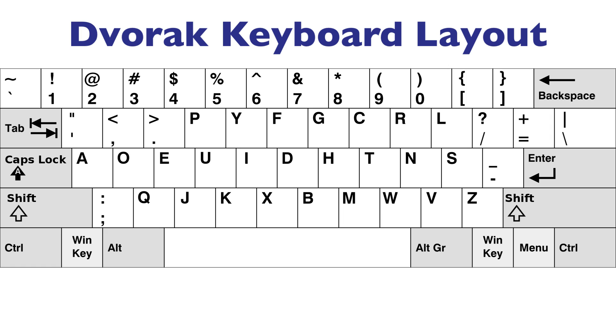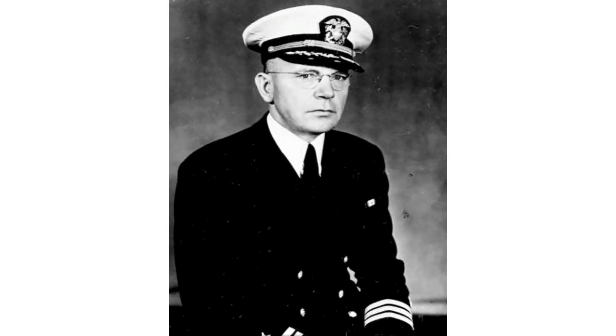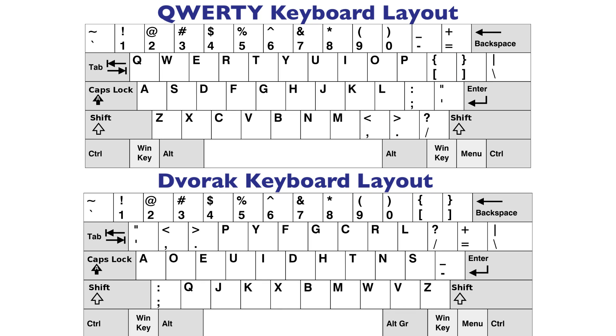The first QWERTY alternative usually mentioned is Dvorak, not named for its keyboard layout but for its inventor, Dr. August Dvorak. He discovered that only 32% of typing was actually done on the home row on a QWERTY layout, so he set out to design a new layout that would reduce overall finger movement on the keyboard. On a Dvorak keyboard, 70% of typing is done on the home row. This sounds exactly like what I'm looking for. The downside is that the layout is almost entirely different from QWERTY, so there is a steep learning curve. But if it's the most efficient method, maybe it's worth it.